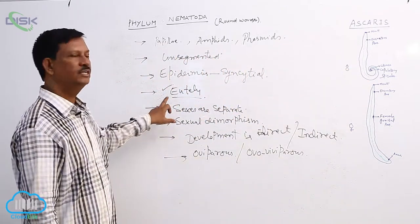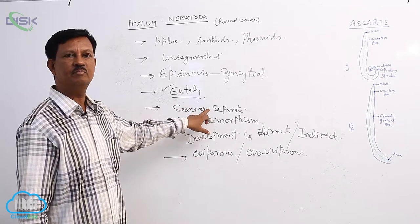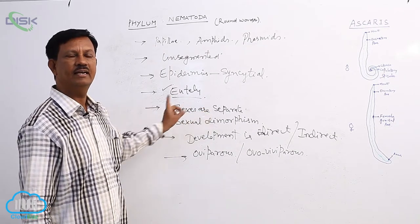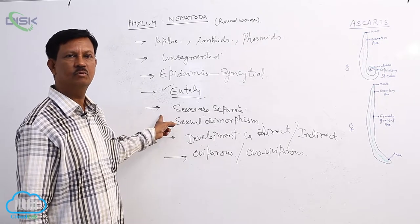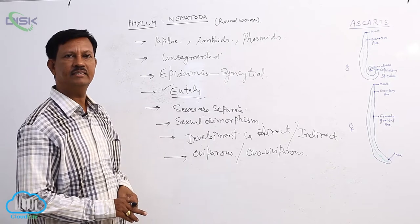They show eutely and epidermis is syncytial type. And alimentary canal is complete - both mouth as well as anus are present. And excretory system is H-shaped.